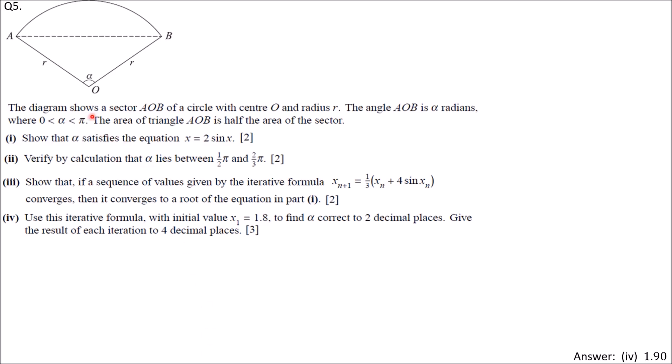Question 5. The diagram shows a sector AOB of a circle with center O and radius R. The sector has center O, radius R, angle AOB is alpha radians where 0 < alpha < pi. The area of triangle AOB is half the area of the sector.